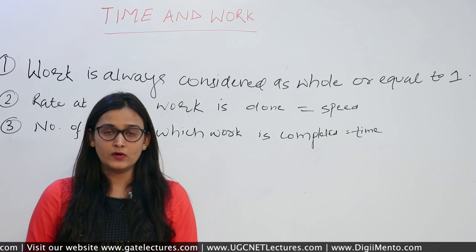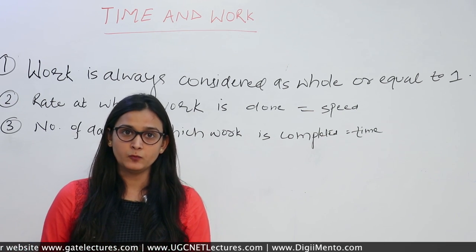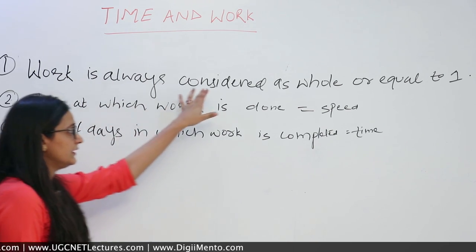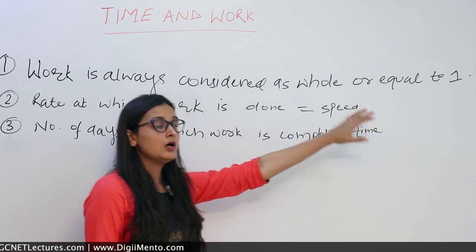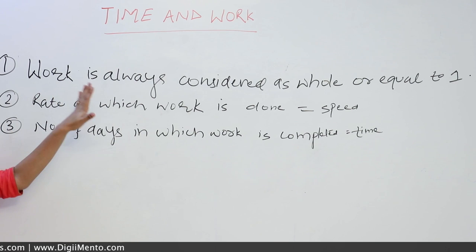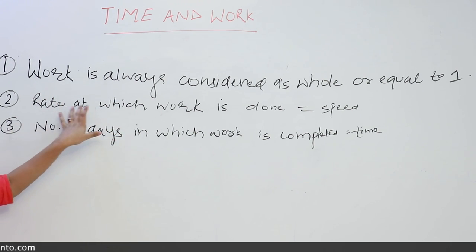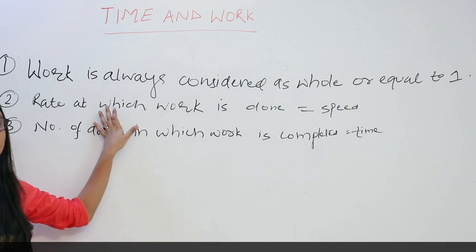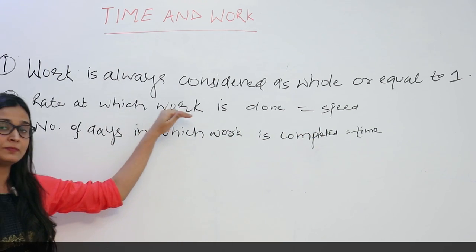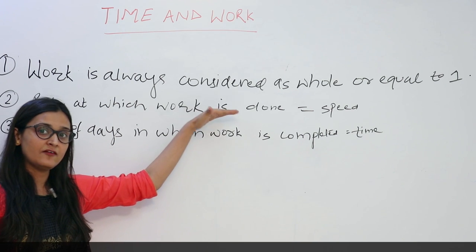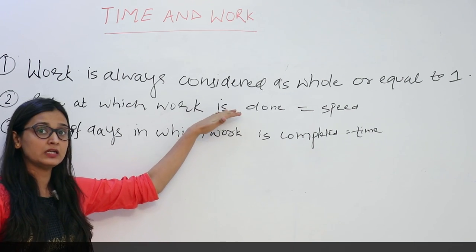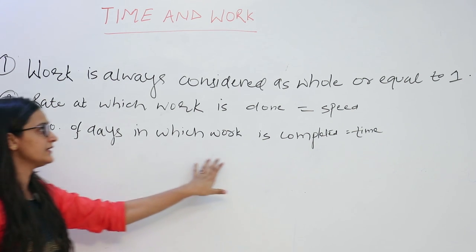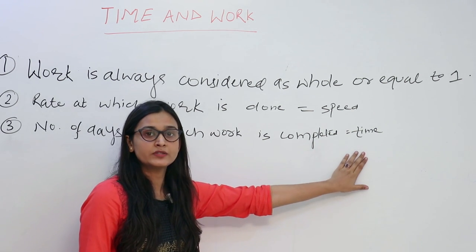From the definition of work, we conclude three points. Number one: work is always considered as whole or equal to one. Number two: the rate at which work is done is equal to speed. Number three: the number of days in which the work is completed must be equal to time.